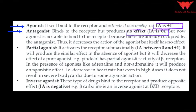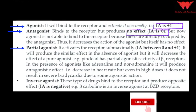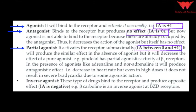When an antagonist is present, the agonist is not able to bind to the receptor because the sites are already occupied — the antagonist decreases the action of the agonist but does not produce a negative effect on the receptor itself. A partial agonist activates the receptor sub-maximally — somewhere between non-activation and maximum activity — so its intrinsic activity is between 0 and plus 1. In the absence of a pure agonist it will produce some effect, but it will decrease the effect of a pure agonist.